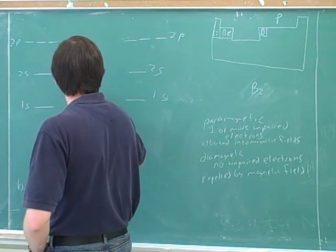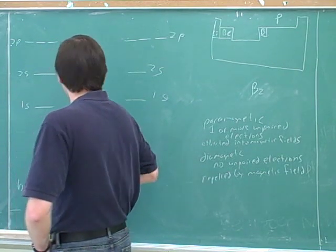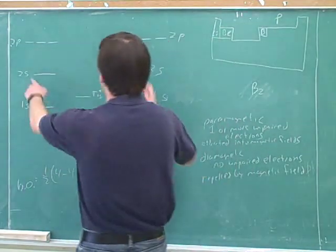And this should be labeled? Right. And how about the overlap between the 2s orbitals?